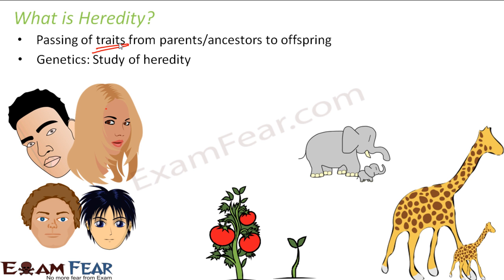The branch of science which deals with the study of heredity is genetics. There are a lot of details you can learn in heredity, which is why it has come up as a separate branch of science called genetics. Genetics is really, really interesting. Here you will get to know only the basics of genetics, and when you go to higher classes — maybe class 12 — you will learn more details and see how interesting it is.